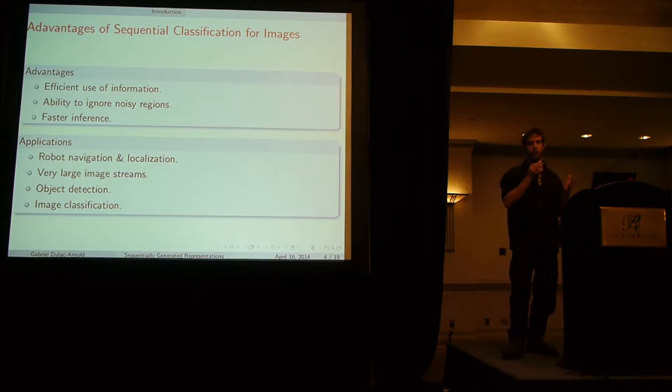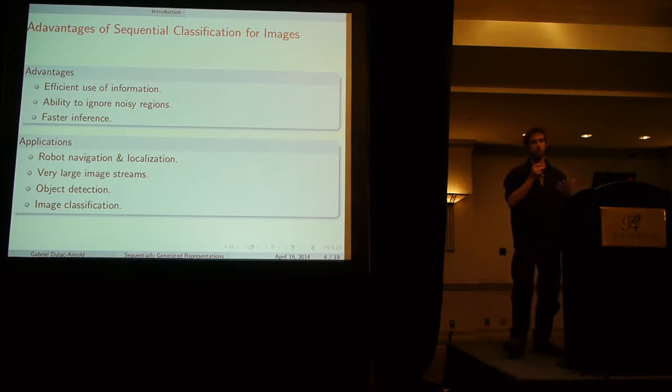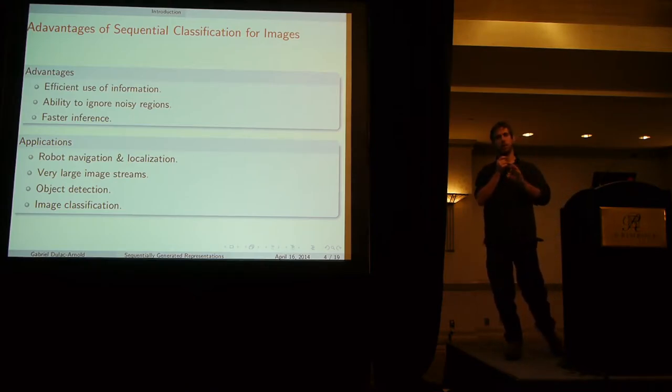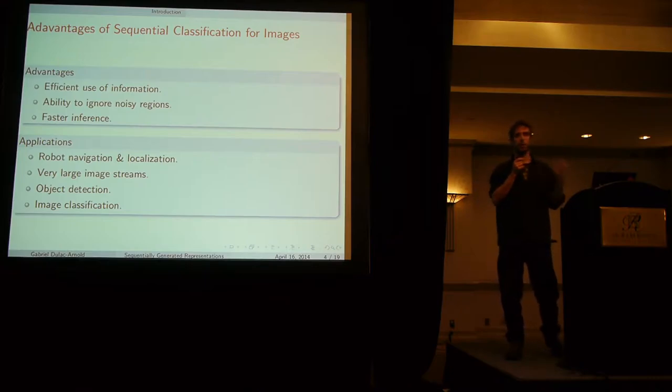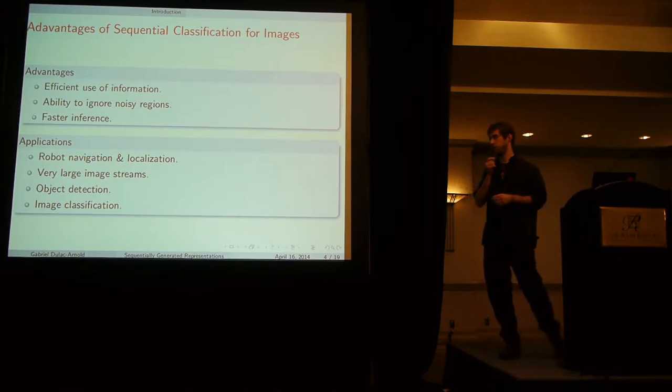In terms of applications, one nice one is if you have a robot navigation task with a small opening for your camera, not a very wide field of view, and you want to have localization running. You need to look around you and you need to know which direction you're pointing your camera to better localize. You don't want to just go over your whole possible set of directions because that would take pretty long.